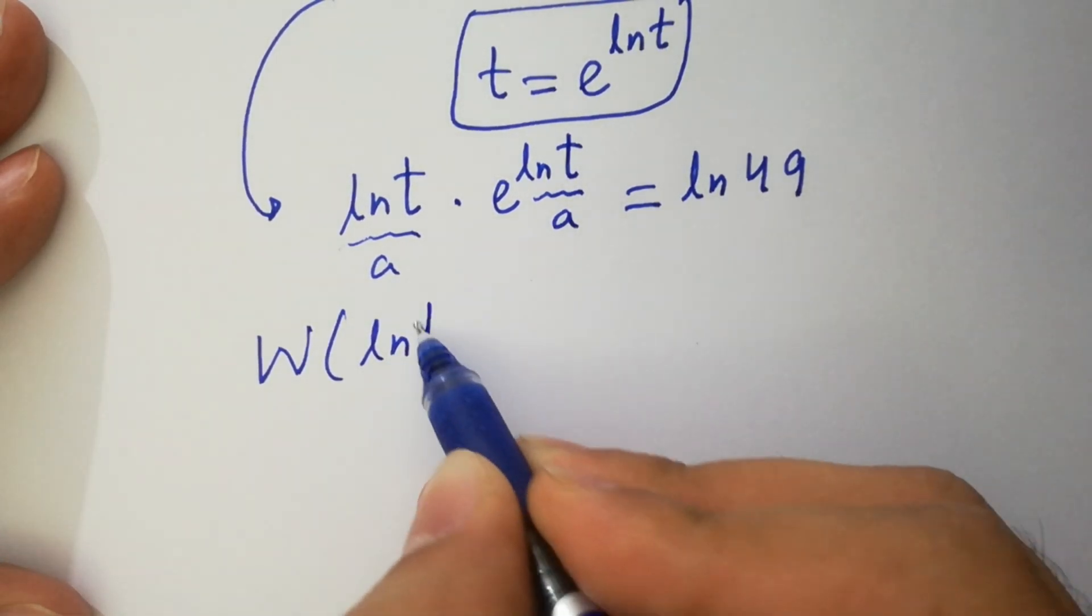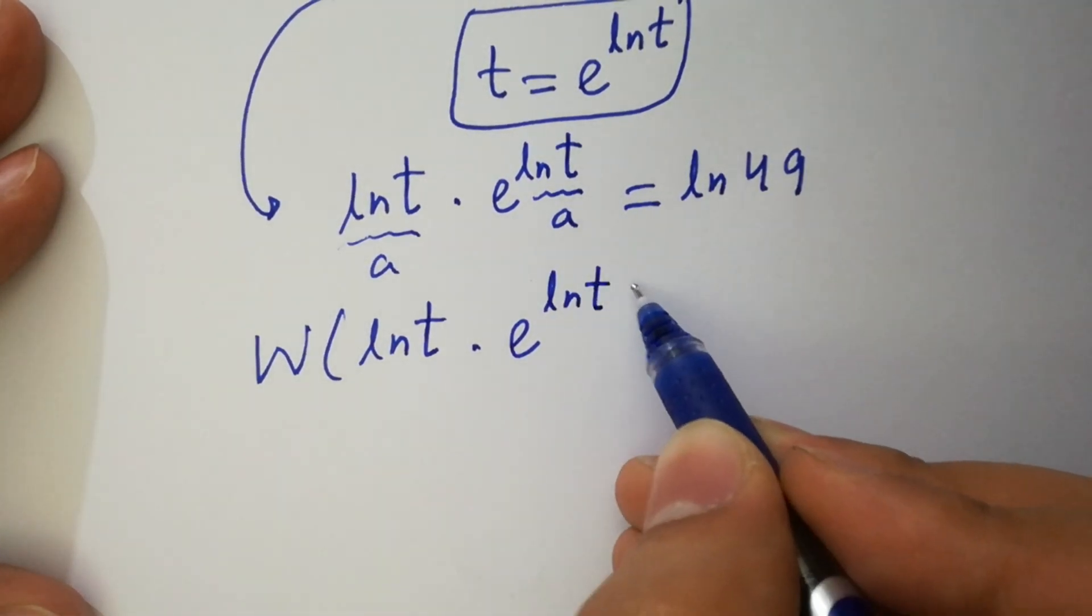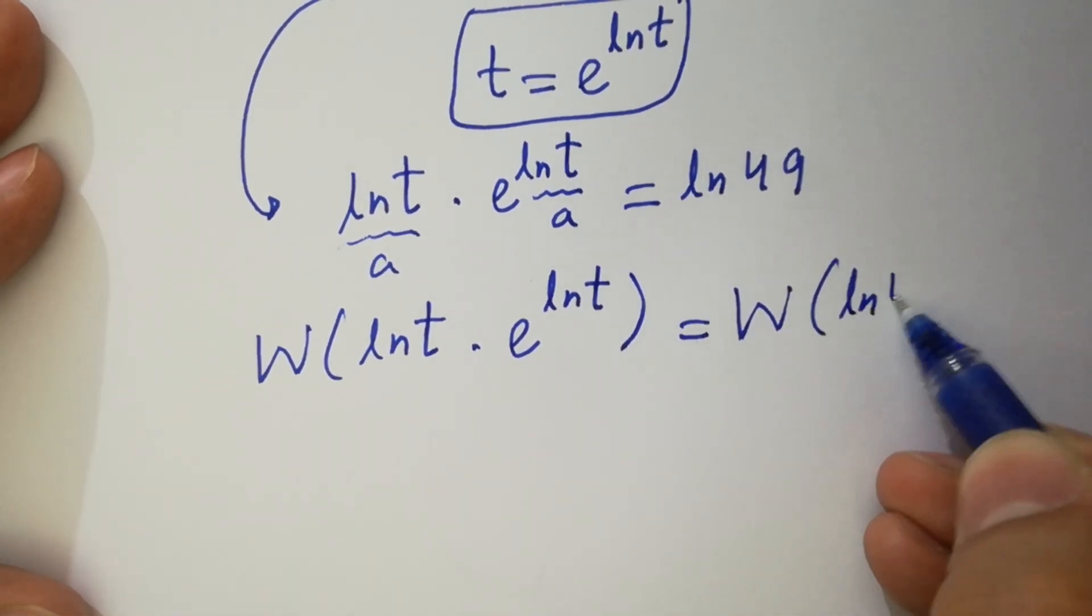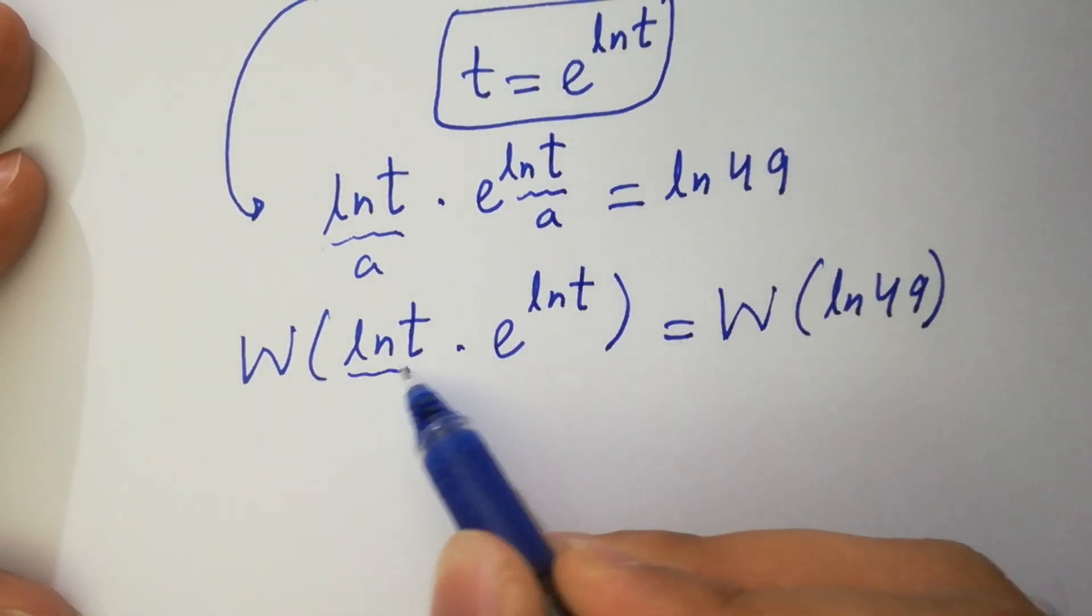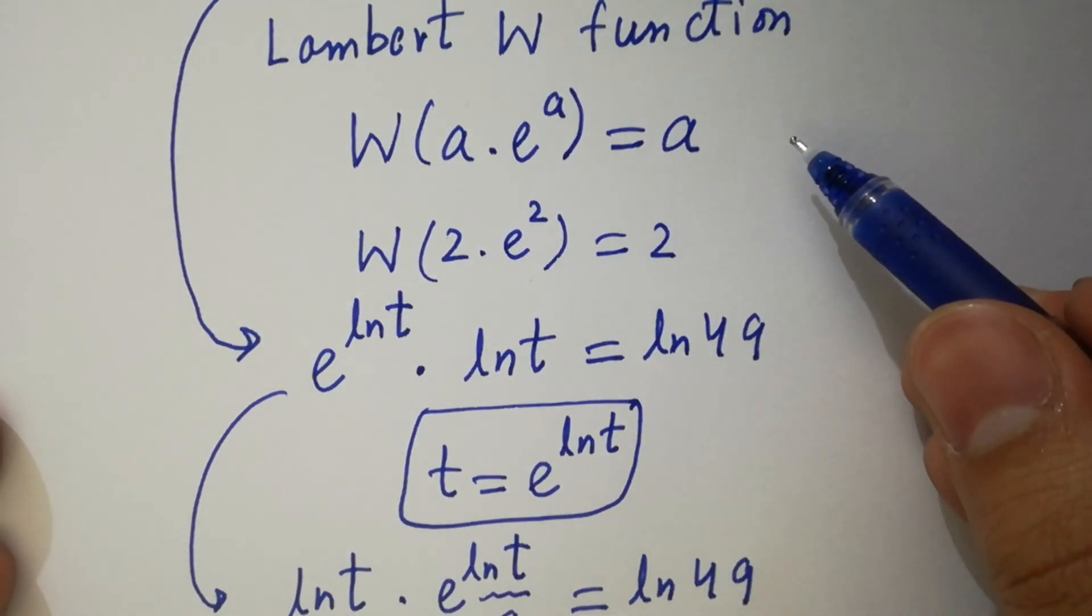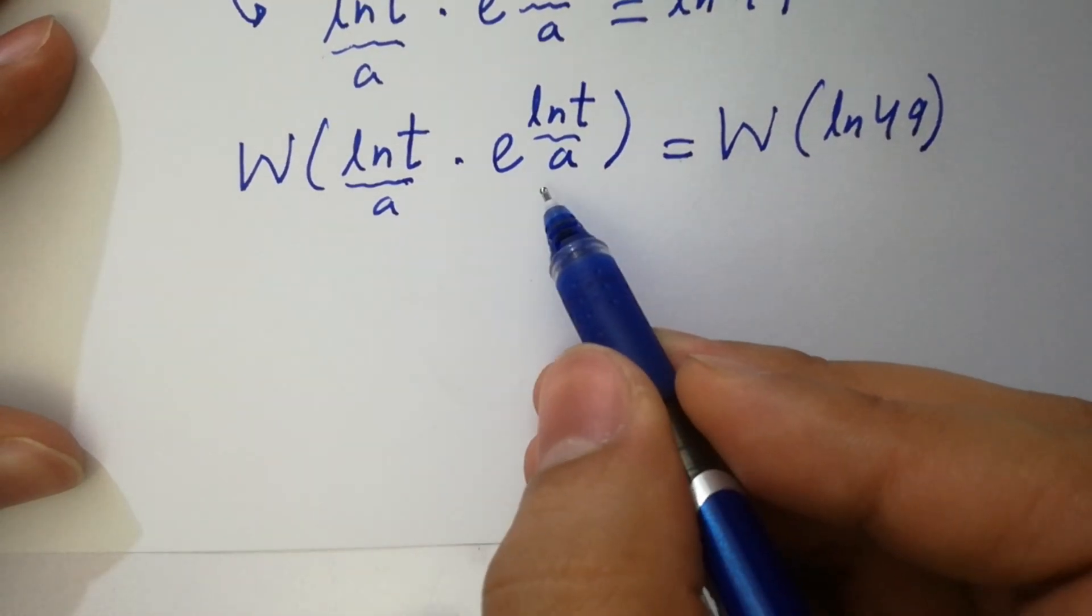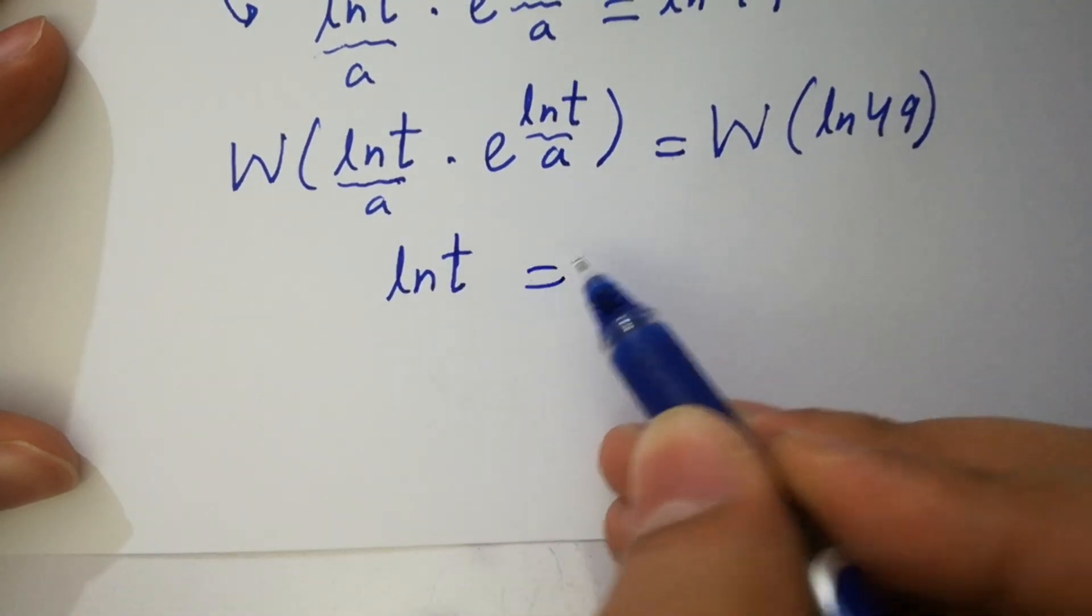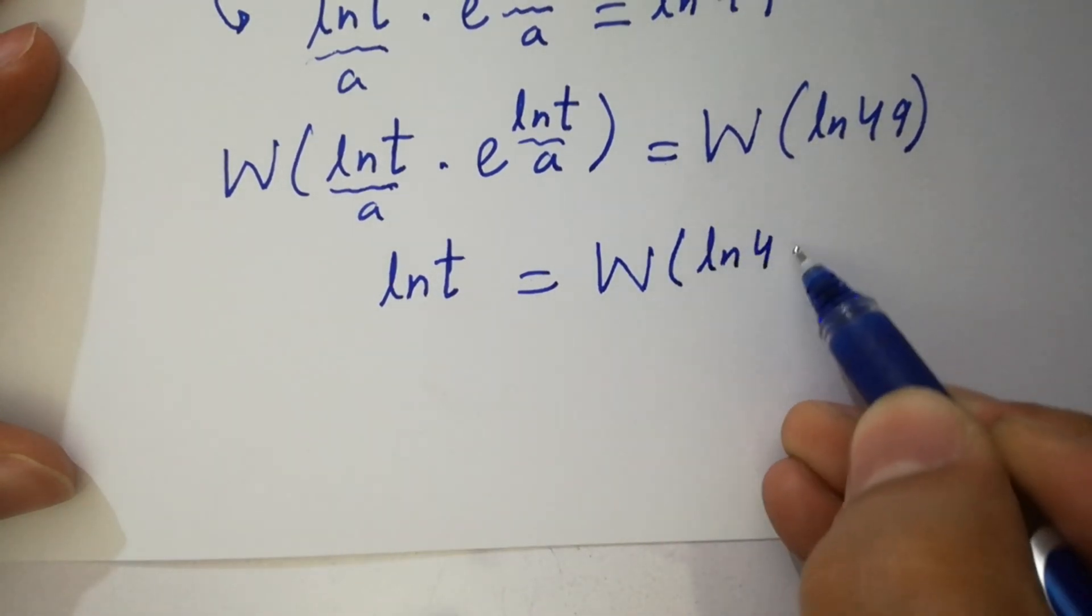So here W of ln t times e to the power ln t, where W of a times e to the power a equals a, it will be W of ln t times e to the power ln t will be equal to ln t. And here W of ln 49 as it is.